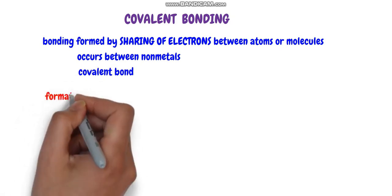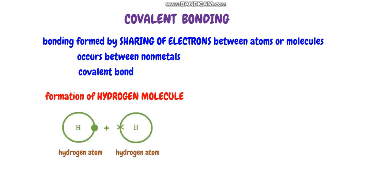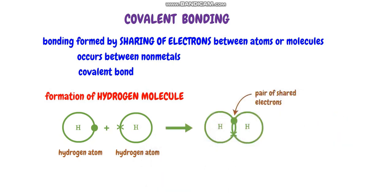The first example of covalent bond formation is the hydrogen molecule. In a hydrogen molecule there are two hydrogen atoms, each containing one electron in the outer shell. They share one pair of electrons between them to form a single covalent bond. This single covalent bond is represented by a single dash, that is H–H. This is the hydrogen molecule formation.